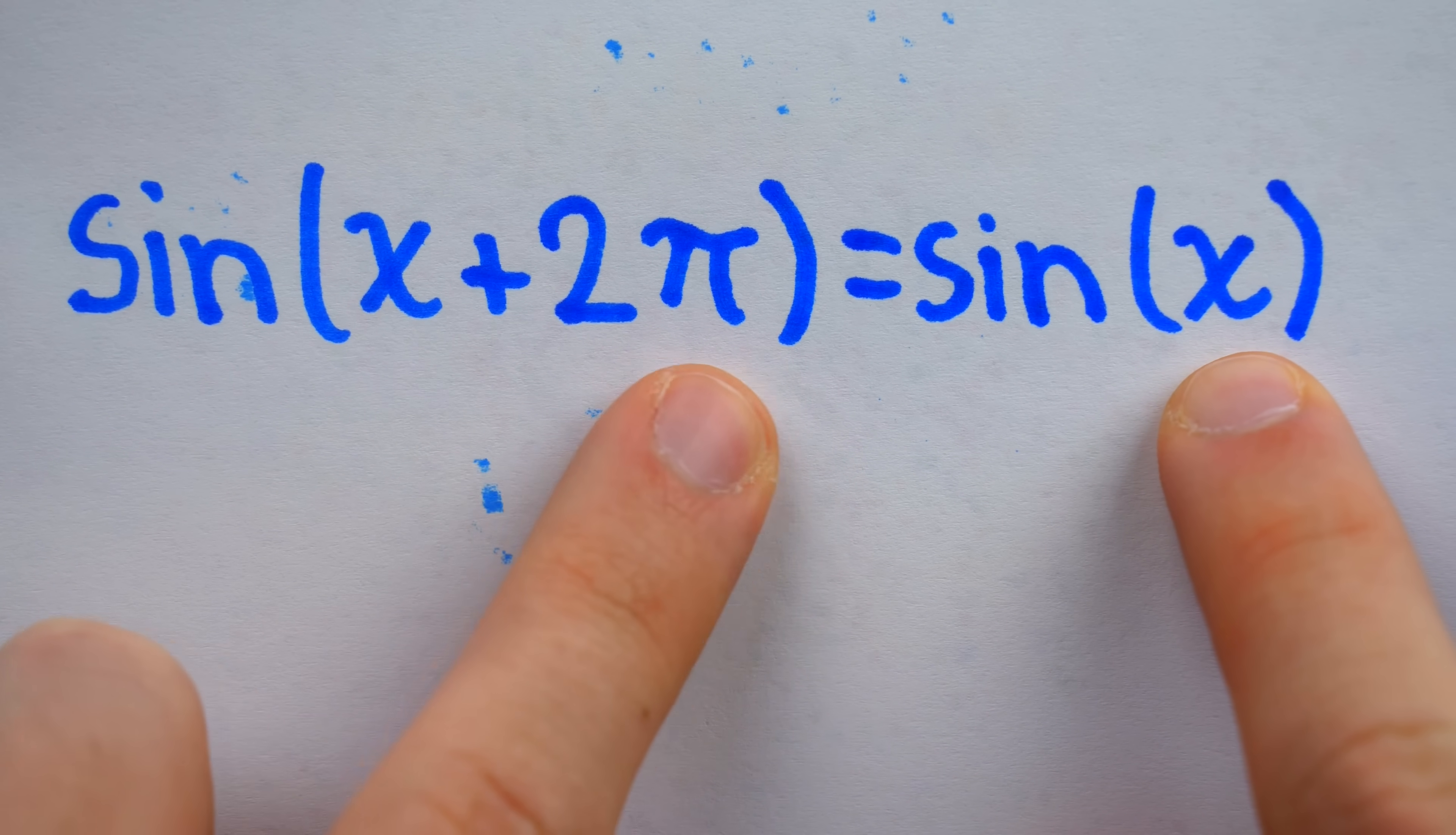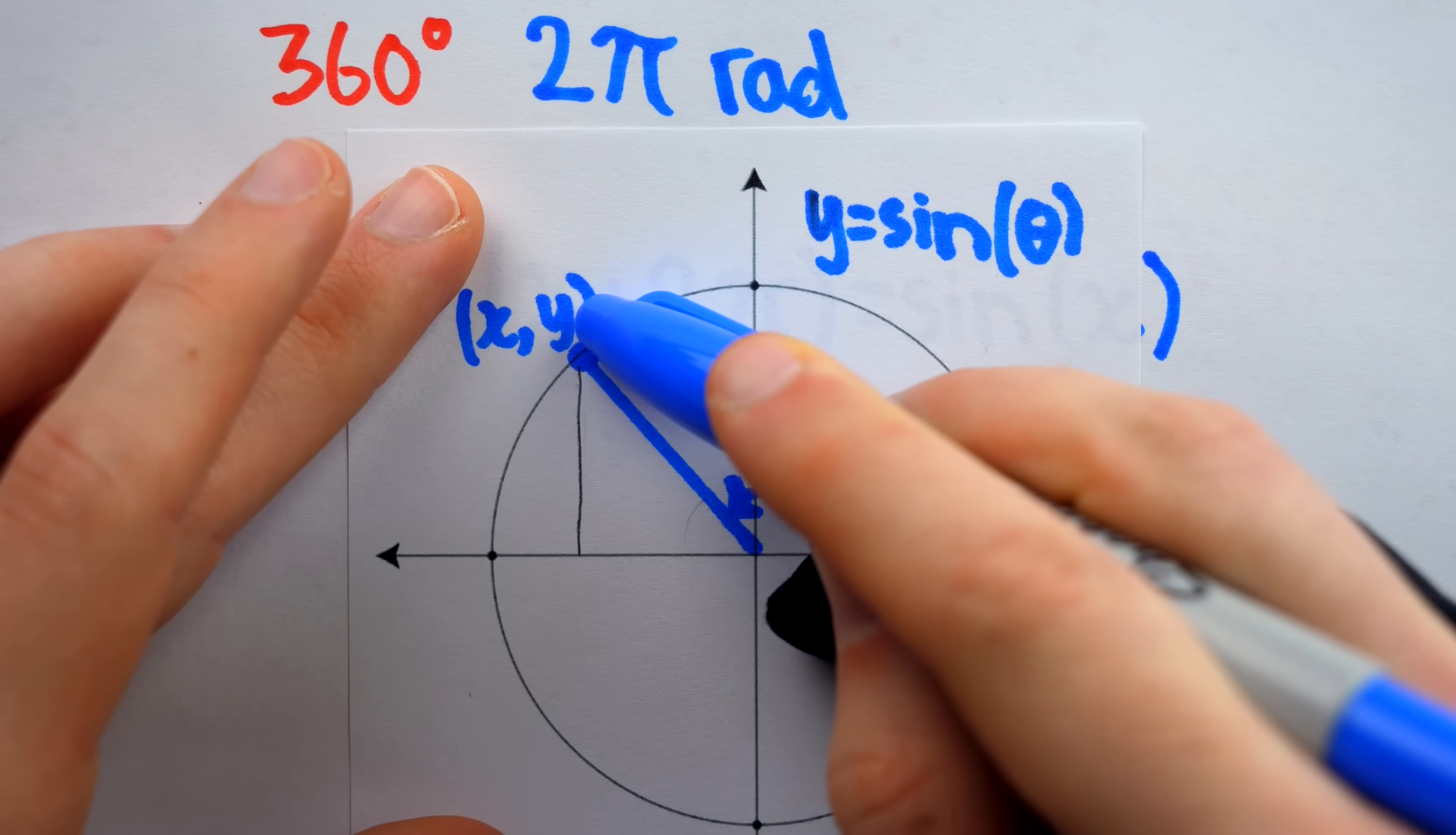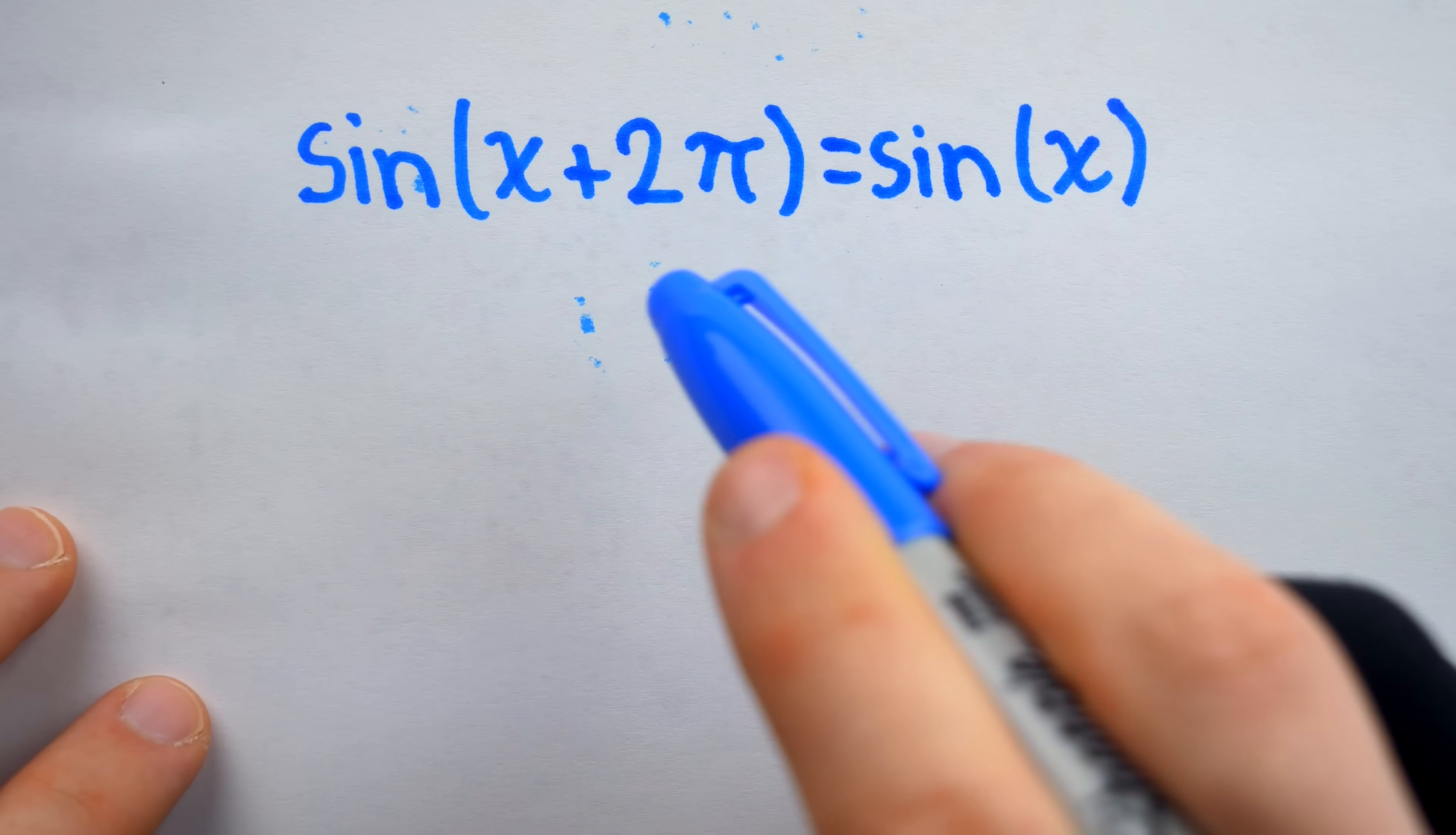And that means that sine of x plus two pi is the same as sine of x. Remember, inside the sine function is an angle. If we add two pi to an angle, that's just a full rotation. And of course, a full rotation isn't going to change the sine value. We just get back where we started.